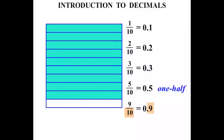And a good thing to think about when you see it's over ten. When we're dealing with tenths, we have what we call one decimal place. There's just only one number after the decimal point.